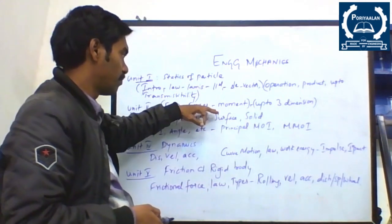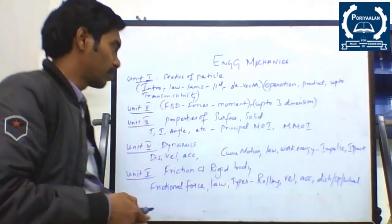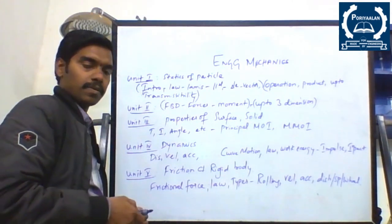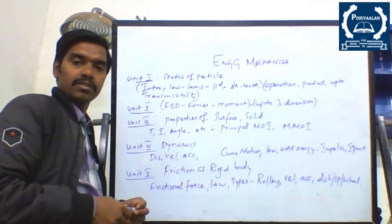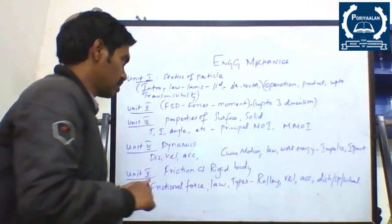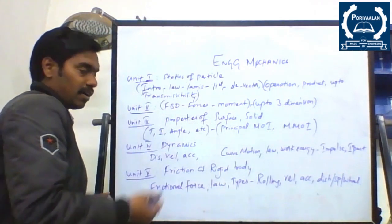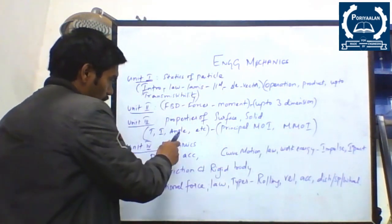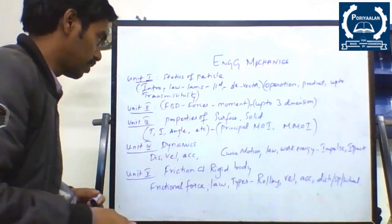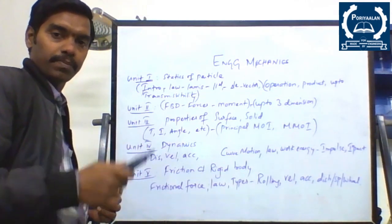You should be strong in either area one or area two. If you are strong in any one area, you can attend the 16-mark question. In Unit 3, we are going to see about the properties of surfaces and solids. Here we are going to study about different types of sections like T sections, I sections, and different angular sections. From this area, you will get one 2-mark question from each, and simultaneously for the 16-mark long answer, you will get one from each area — either diagram-based or discrete types. You should be strong in both areas.